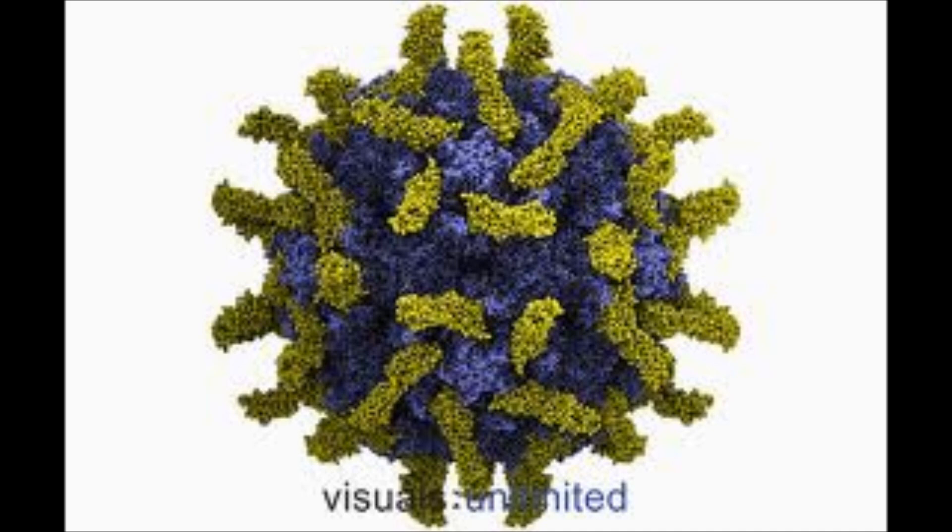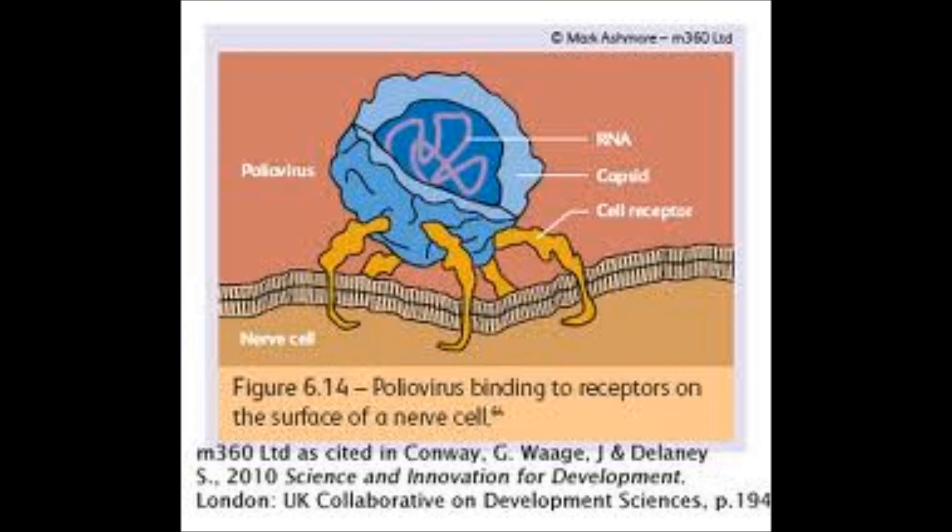Once polio is attached to the host cell, the capsid opens and the genetic material is released. The virus will then reproduce in the cell until released.